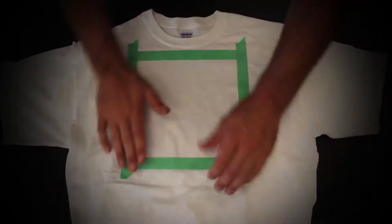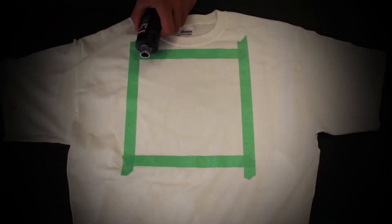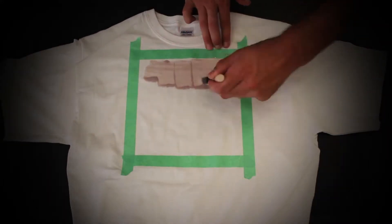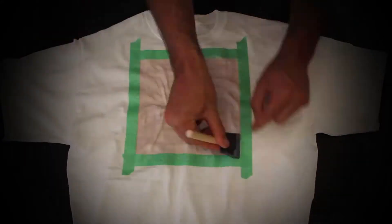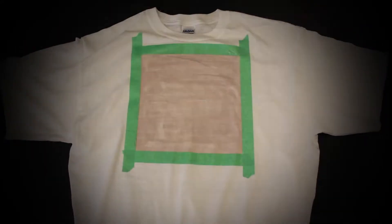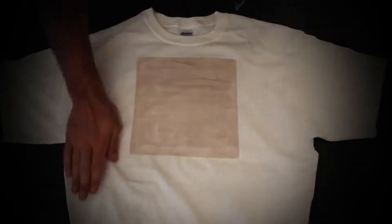But suppose you wanted sharper edges. Easy. Just use masking tape to block off a window the size of your image. Solar Fast is thick enough that it won't seep underneath the masking tape as long as the tape is pressed firmly to the fabric.